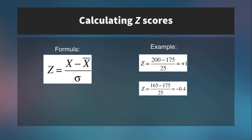Here is the formula for calculating z-scores: z equals your score minus your mean, over your standard deviation. In this example, if we convert to pounds, it would be 200 minus 175 over 25. So 200 is the score, 175 is the mean, and 25 is the standard deviation.